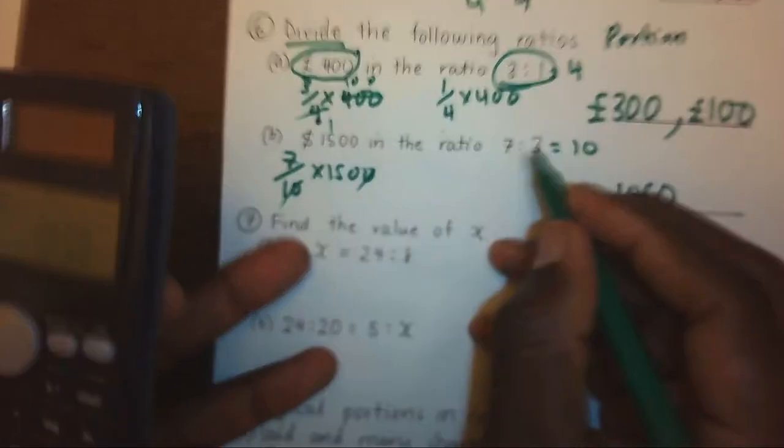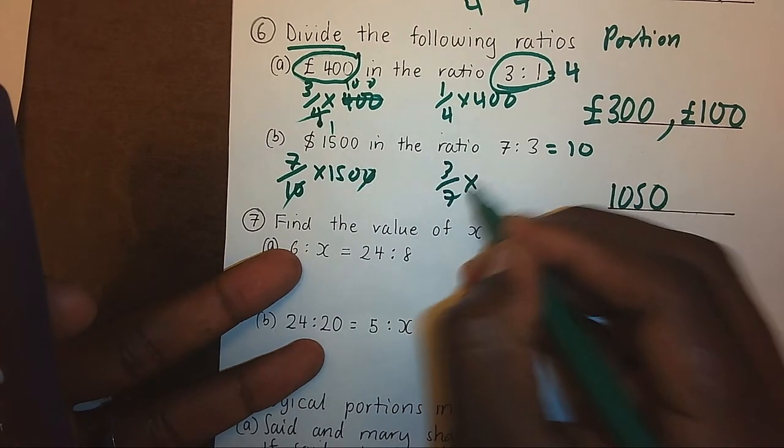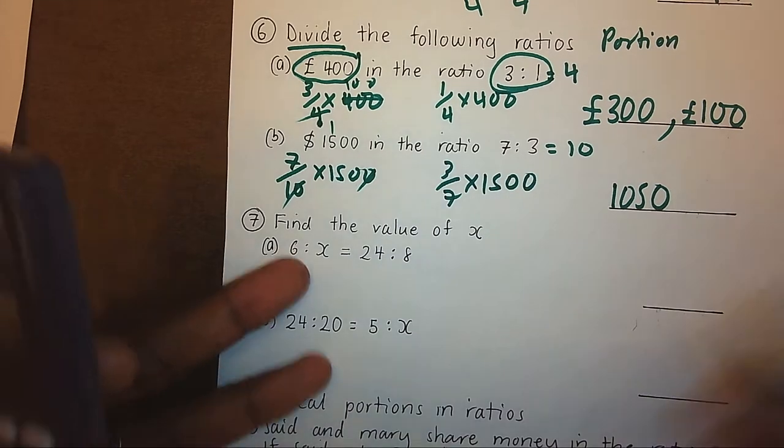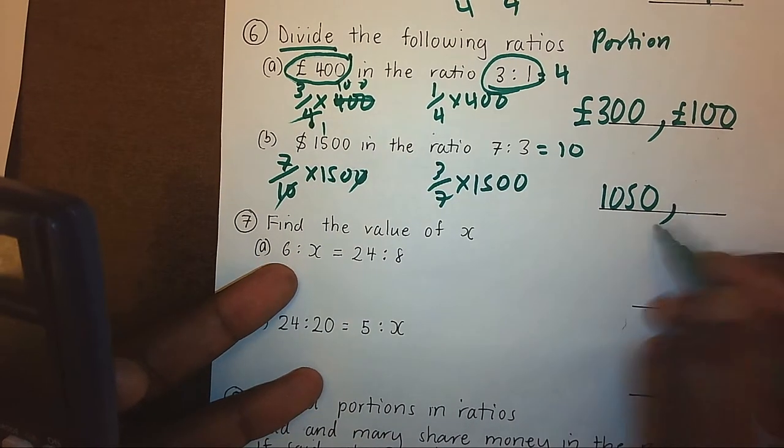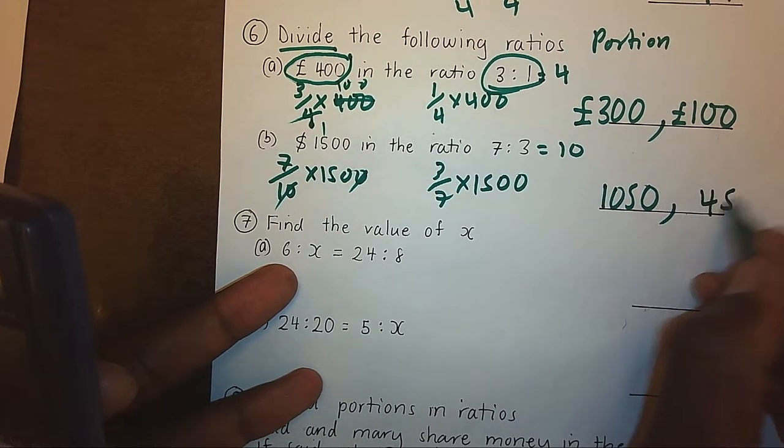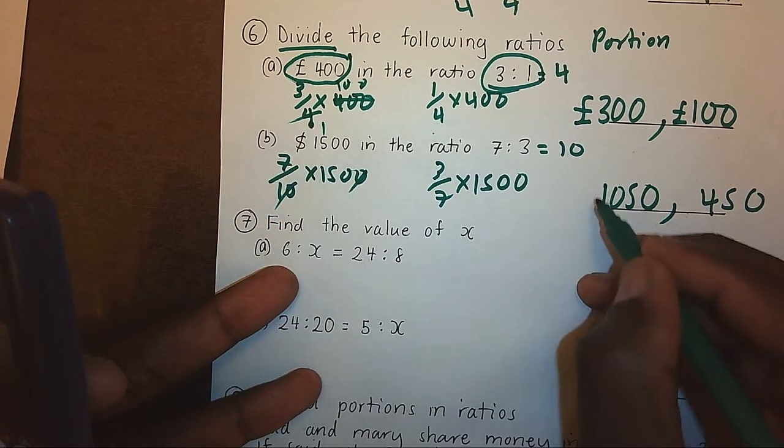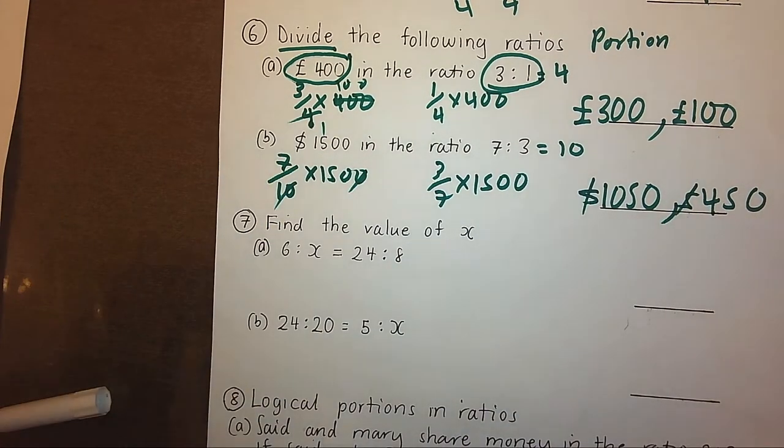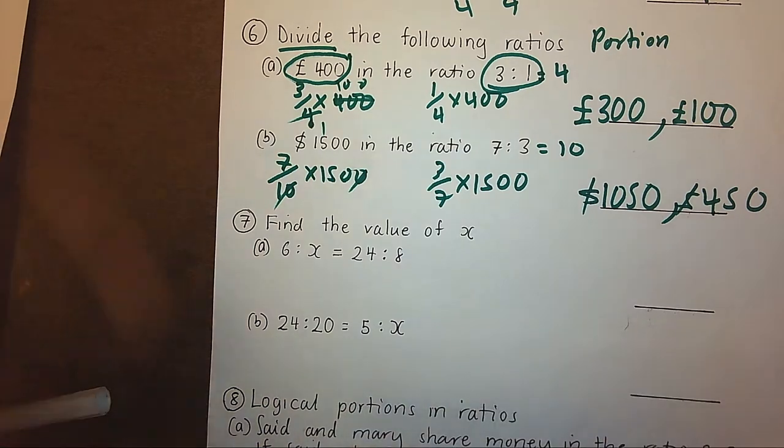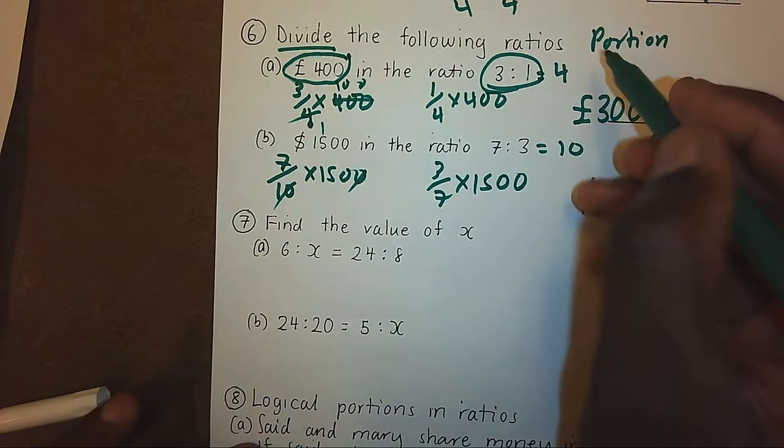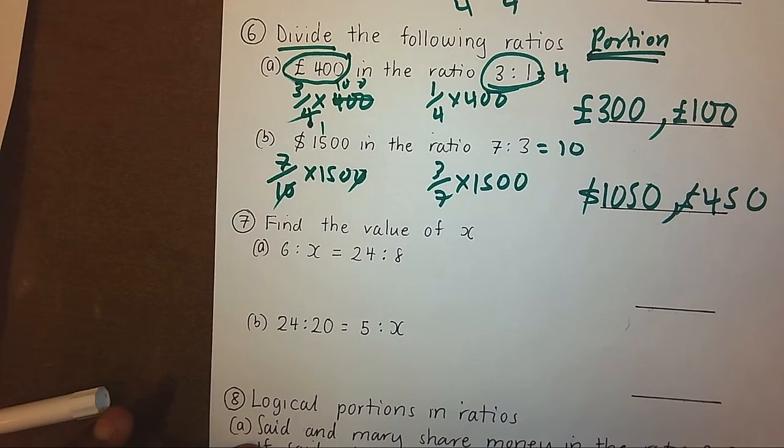And the other 3 over 10 times 1500 will give me 450 dollars. That was division of the ratio. Dividing the ratio is getting the portion of the ratio.